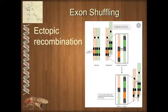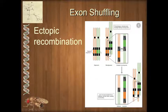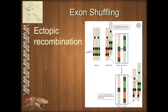So what do we mean by exon shuffling? The most common mechanism is when we get some form of ectopic recombination. There are two main types of ectopic recombination. The name itself just means recombination at an unusual site, somewhere where it's not really supposed to be. Ectopic is a word you may be familiar with from the term 'ectopic pregnancy,' which results from when an egg implants in the fallopian tubes rather than in the uterus.